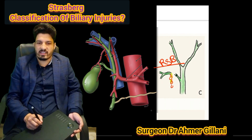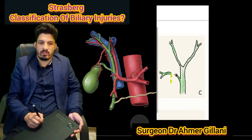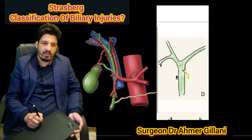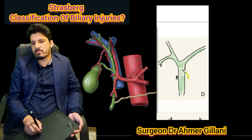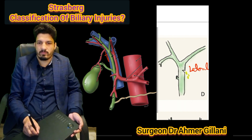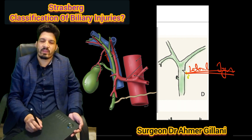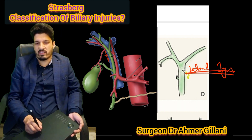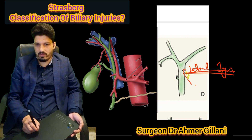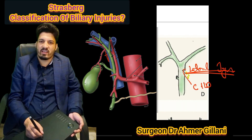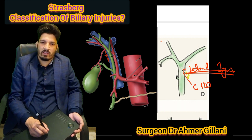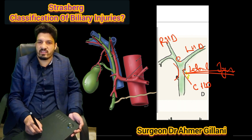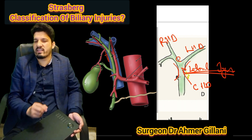Finally, what is included in Type D? Type D is basically the lateral injury — the lateral injury of the common hepatic duct. This is the common hepatic duct. This is the right hepatic duct, this is the left hepatic duct, this is the confluence, and this is the common hepatic duct — and this is the lateral injury.